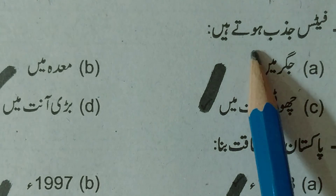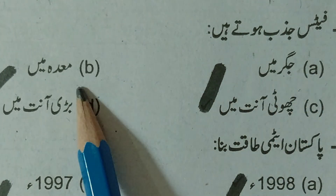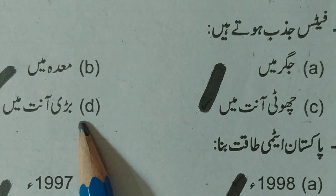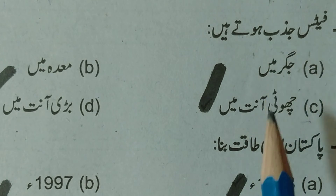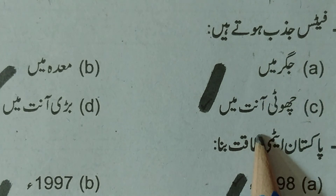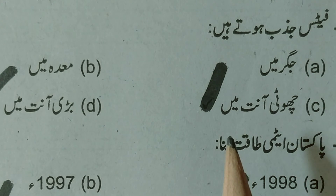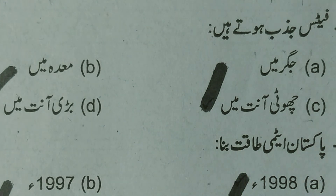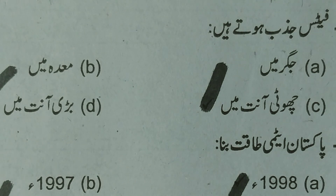MCQ 14: Where are fats digested? Option A is liver (jigar), B is stomach (maide), C is small intestine, D is large intestine. Option C, small intestine, is the right answer. Most of the time people want to be slim and smart, but fat accumulates because fats are absorbed and stored via the small intestine.